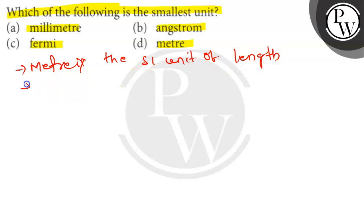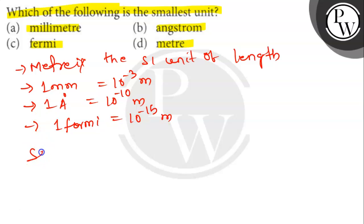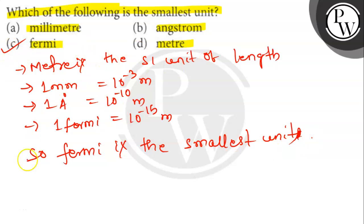One millimeter is 10 to the minus 3 meter. One Angstrom is 10 to the minus 10 meter. One Fermi is 10 to the minus 15 meter. So Fermi is the smallest unit among all these options. Option C is the correct answer. Thank you.